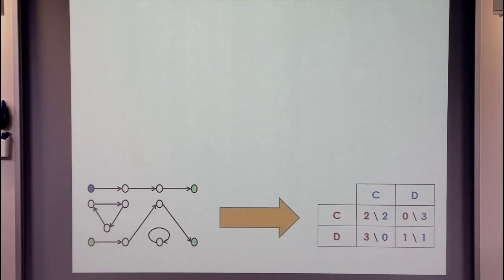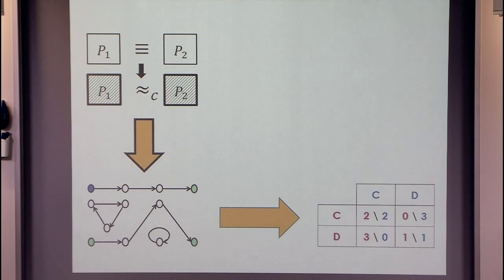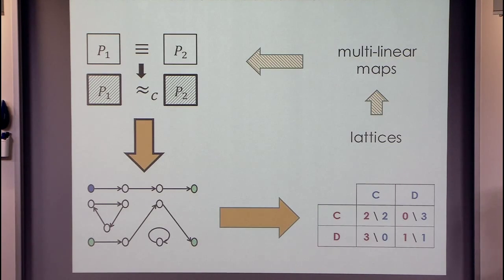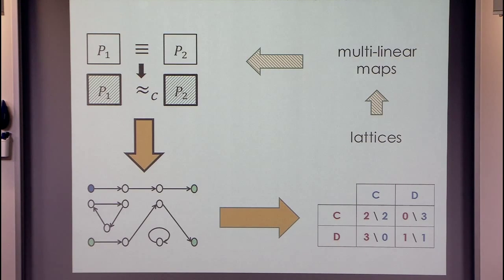Let me conclude. We talked about the hardness of many different problems. We started with the problem of finding a Nash equilibrium, saw it is as hard as End-of-the-Line on graphs, and today proved it is as hard as breaking indistinguishability obfuscation. Our constructions of IO are based on multilinear maps, and multilinear maps in turn are based on lattices — though we still don't know how to base security on standard assumptions. But following this long chain of reductions, you can actually design games that embed inside them a hard lattice problem.